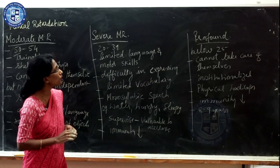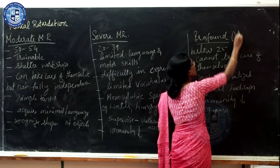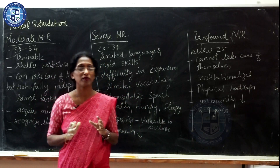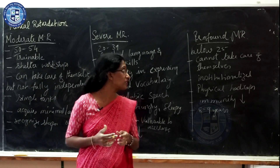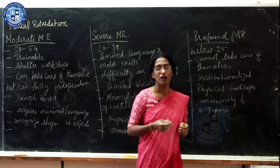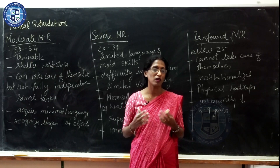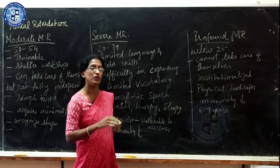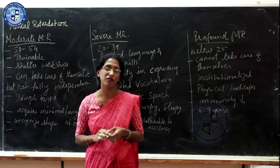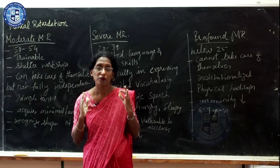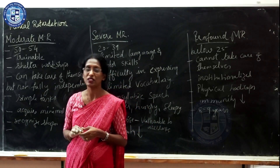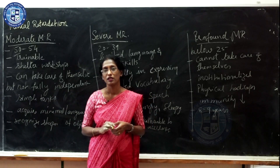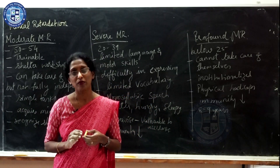Profound mental retardation involves an IQ below 25. These individuals cannot take care of themselves and need to be cared for by others. They are often institutionalized and may have multiple physical handicaps, including problems with vision and hearing. Their immunity is also very low and they can live up to 8 to 9 years. Mental retardation is largely genetic and there is no cure, so they need to be taken care of with love, care, and empathy. Proper training will help them lead a better life in society.